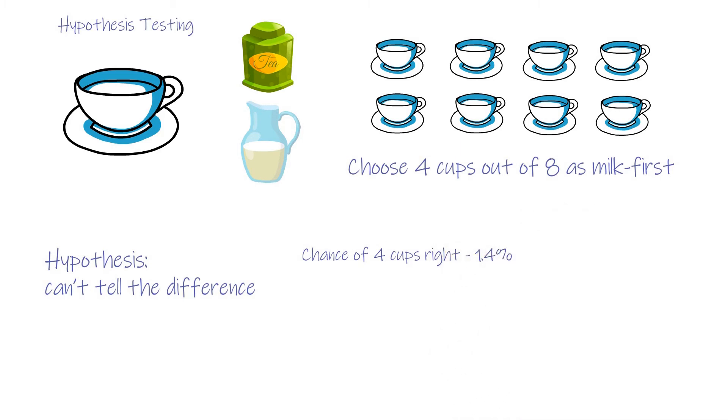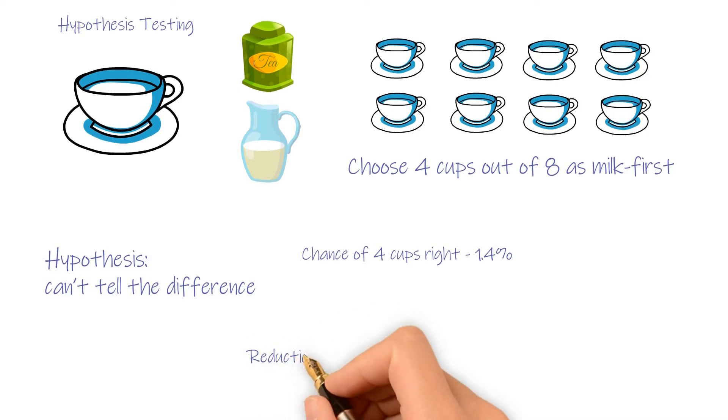So our assumption probably was wrong, and the opposite which is the lady really can tell the difference probably be true. This method in logic called reduction to absurdity.